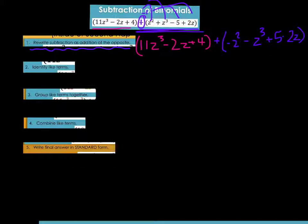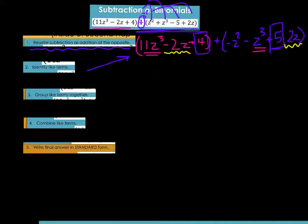Now let's identify like terms. We have a z to the third and another z to the third — I'm underlining them with two underlines. We have a negative 2z and a negative 2z in each expression. I'm going to box the constants. Now I've identified all my like terms, so let's group them together.